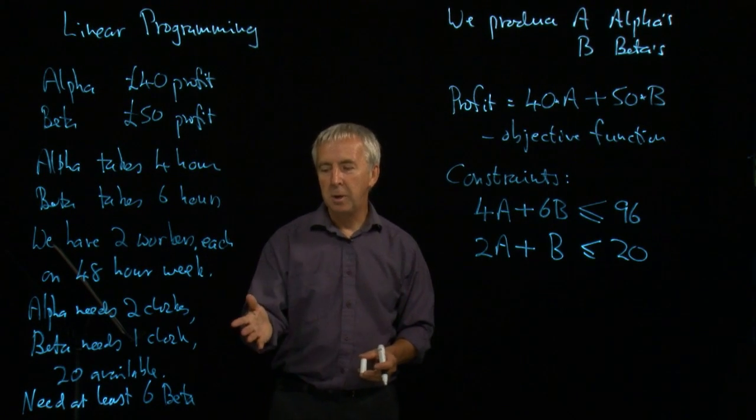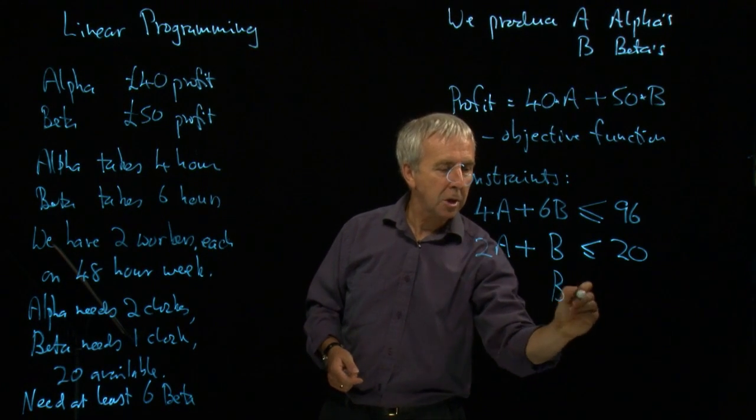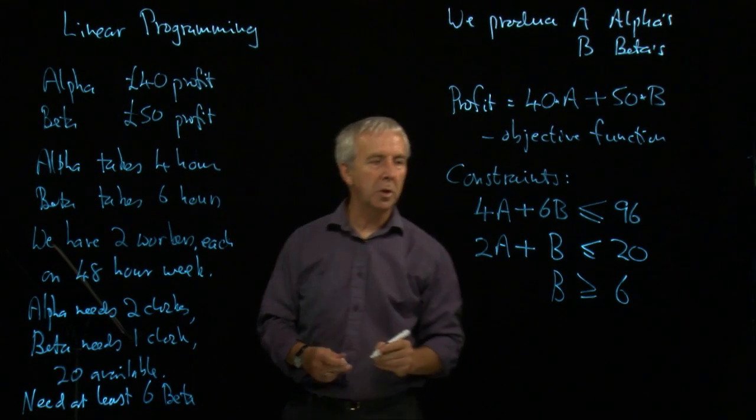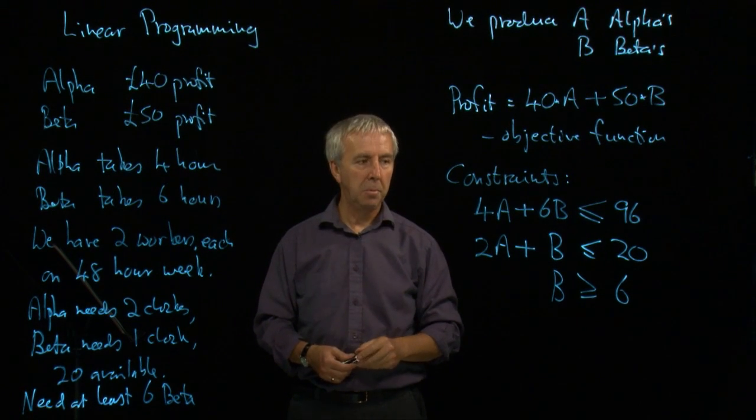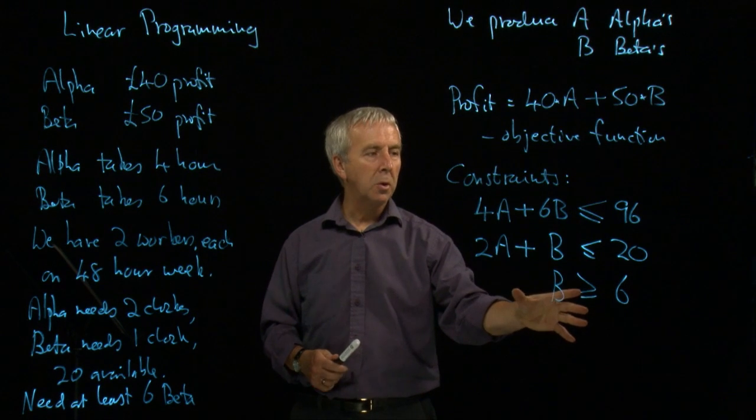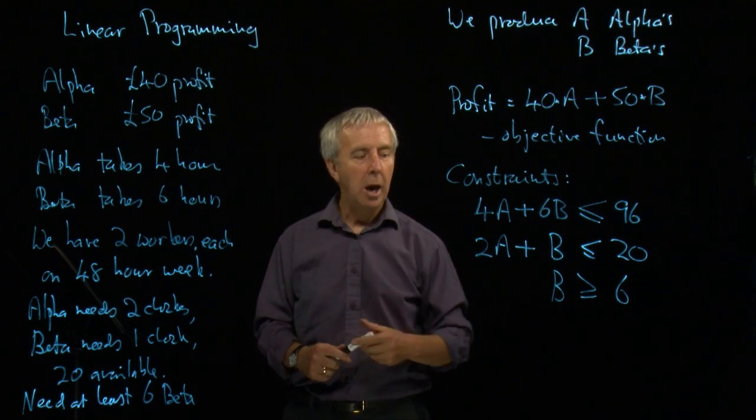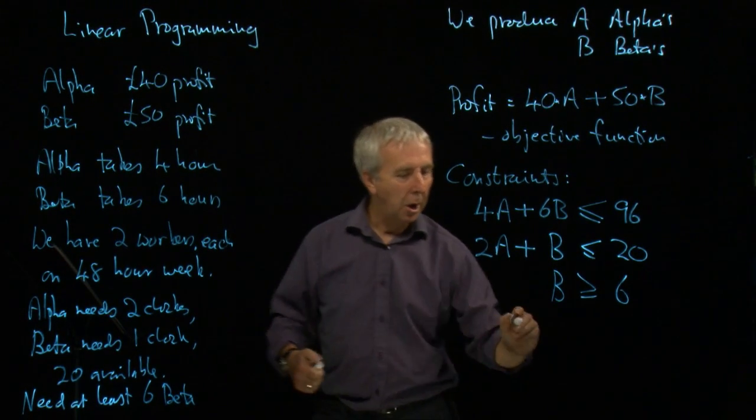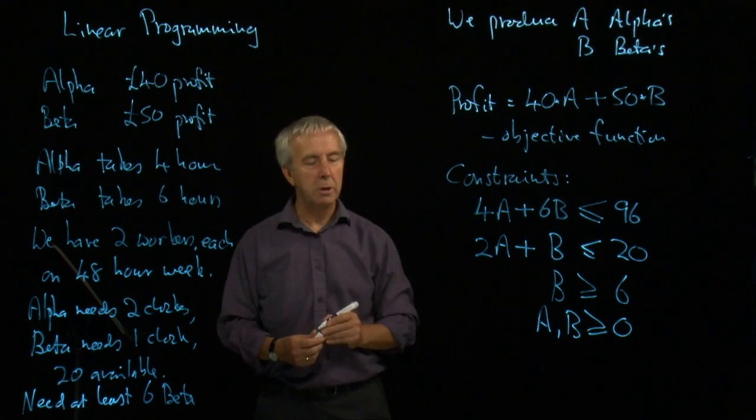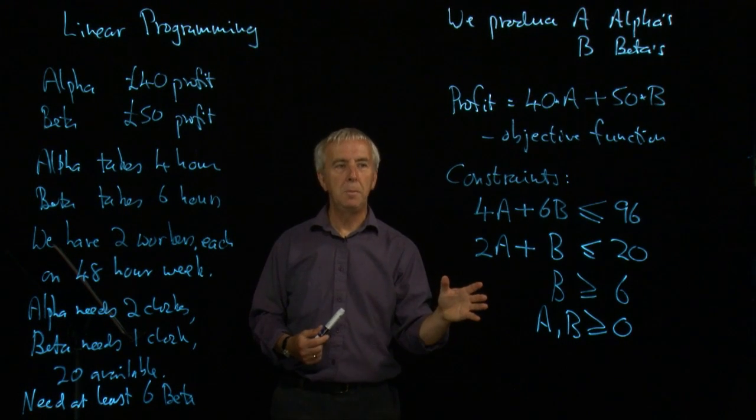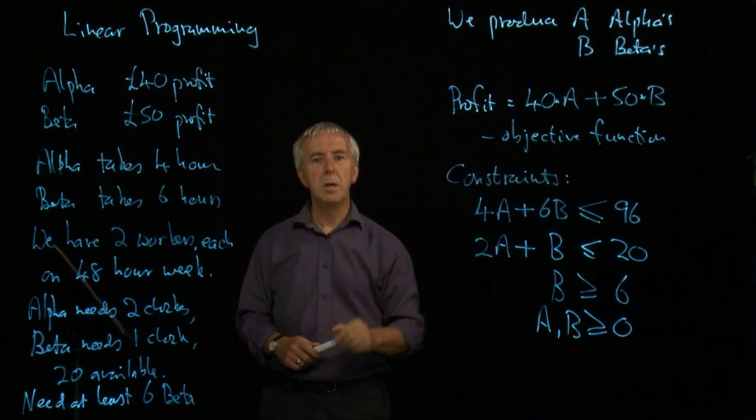And lastly, the number of betas has to be at least six. So b itself has to be greater than or equal to six. That's called the formulation of the linear programming problem. Sometimes we stress, although it's obvious, that a and b have to be positive. You can't make minus three alpha cookers. Sometimes it's taken for granted. I'll just put it in here that a and b both have to be greater than or equal to zero. So that's the formulation of the problem. Let's now find out which values of a and b will maximise the profit.